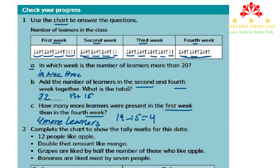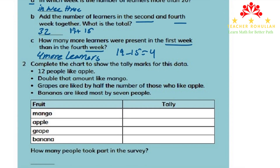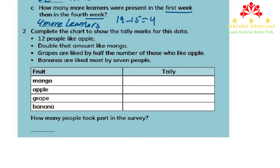Let's now move to question 2. In this question, it says: complete the chart to show the total marks for this data. We have 4 types of fruits here. The first point says 12 people like apple.